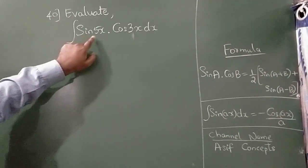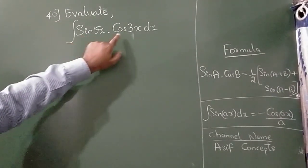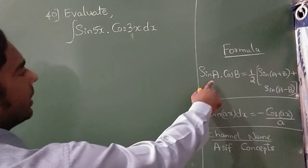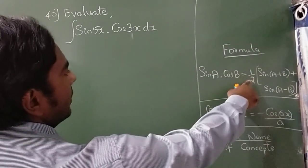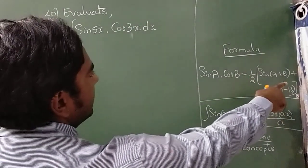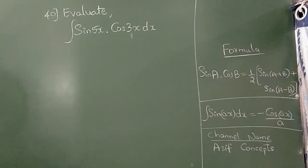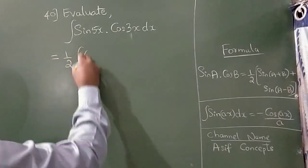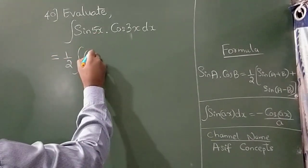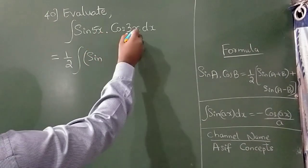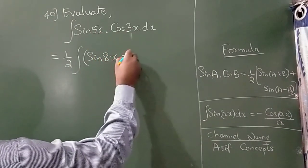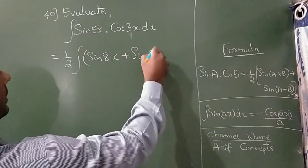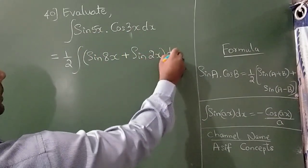Evaluate the integration of sin(5x)·cos(3x) dx. There is a formula: sin(a)·cos(b) = ½[sin(a+b) + sin(a−b)]. So here I am going to write ½ integration of sin(5+3)x plus sin(5−3)x dx, which is ½ integration of sin(8x) plus sin(2x) dx.